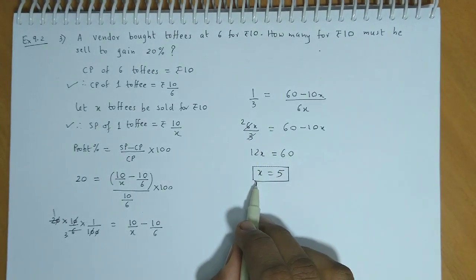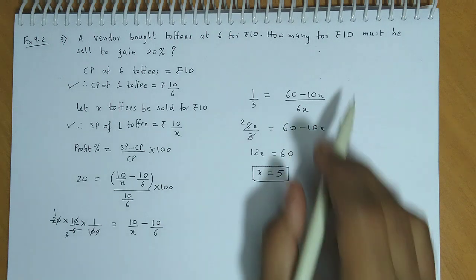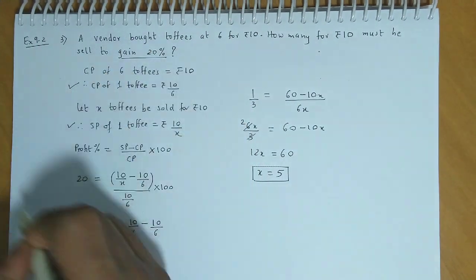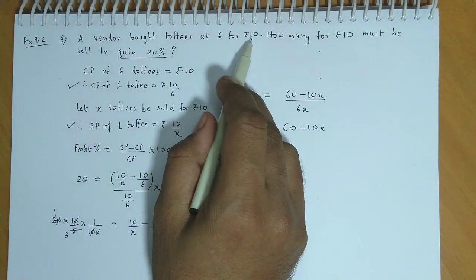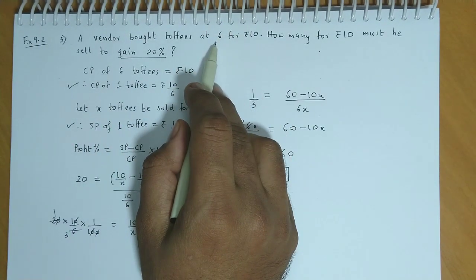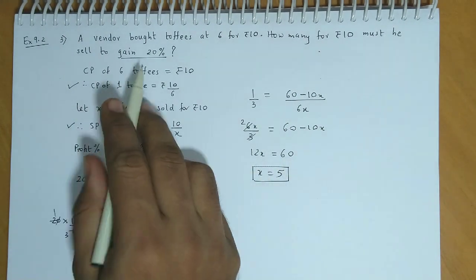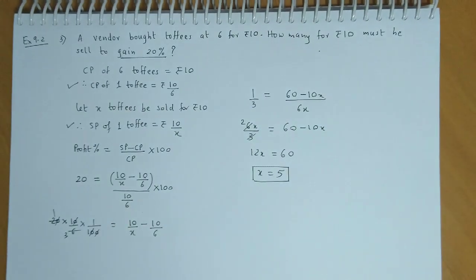He must sell 5 toffees for Rs 10 if he needs 20% gain. In Rs 10, he will buy 6 toffees, and in Rs 10, he will sell 5 toffees for 20% profit.